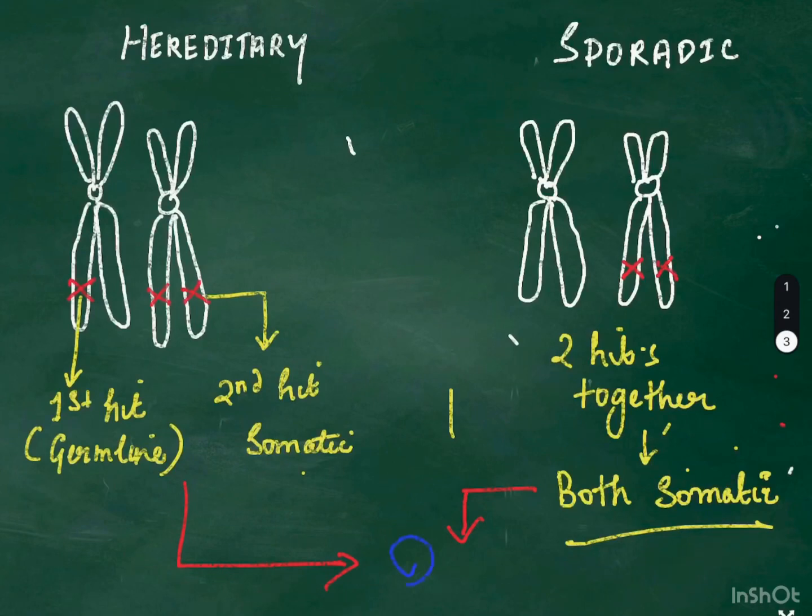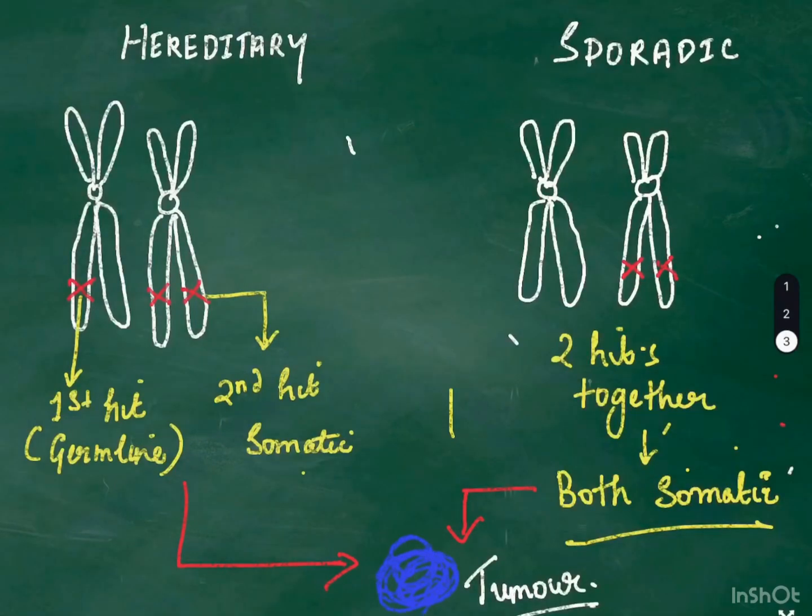One more variety which is seen is the sporadic hereditary form in which the mutation is a germline mutation, but it is not from an affected parent. Parents are typically normal. So it is believed that the mutation occurs during the fusion of the gametes. This is one of the other forms which have been recently recognized.